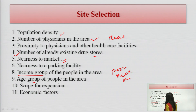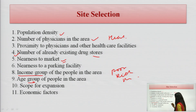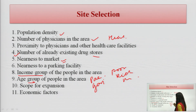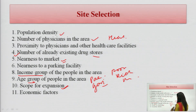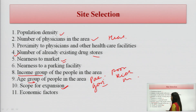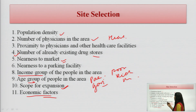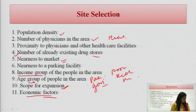What is the age group? The people in that area may be a pediatric population or a geriatric population, because more diseases can be seen in the pediatric and geriatric compared to young people. Scope of expansion — if we want to expand for any other products, the area should be there. What are the economic factors for the retail or wholesale drug store?